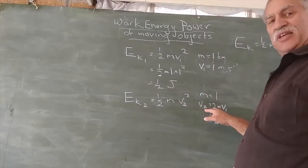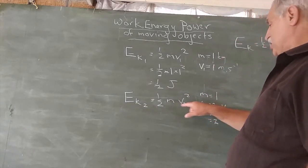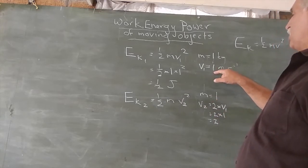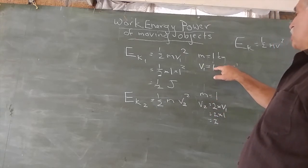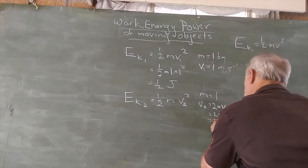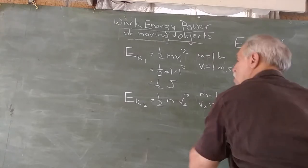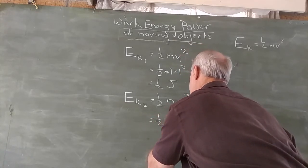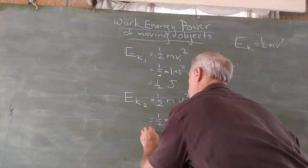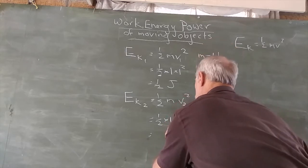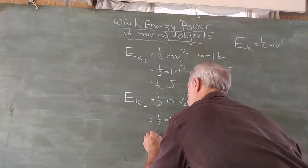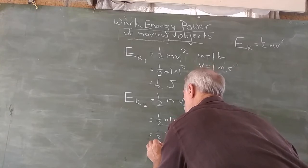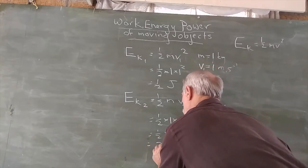In the second case, v2 is twice the original velocity: 2 × 1 = 2 m/s. Now we plug in our values: 1/2 × 1 × 2², which is half of 4, which equals 2 joules.